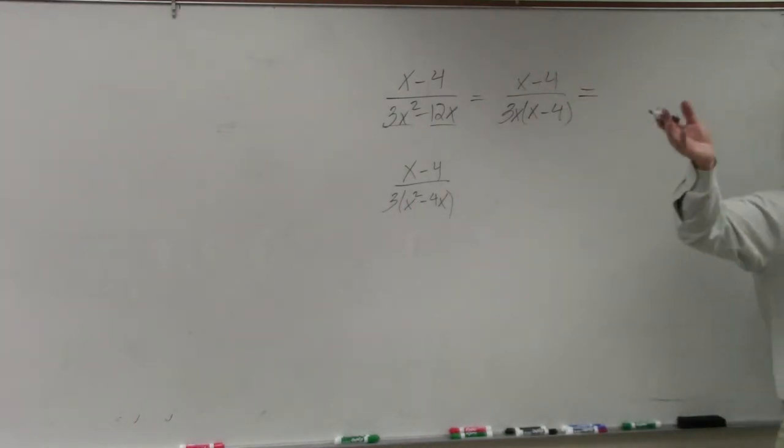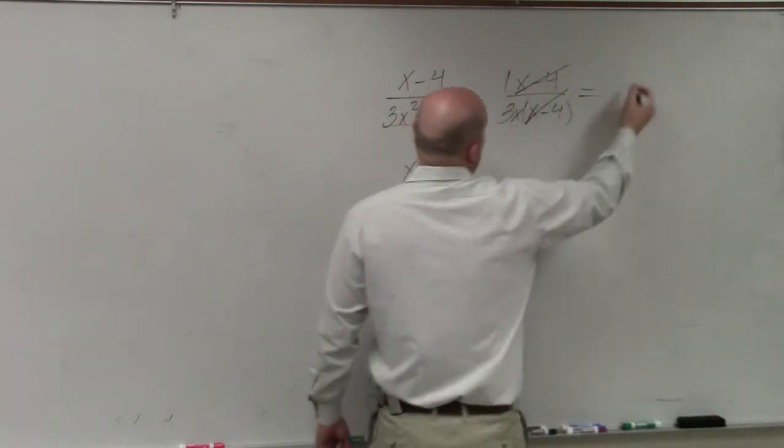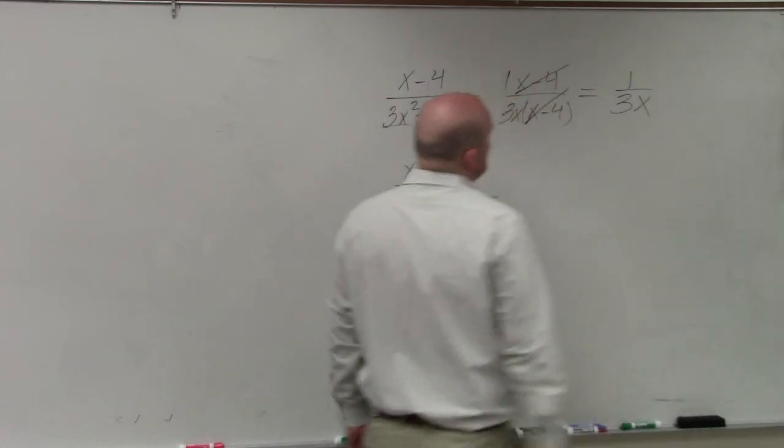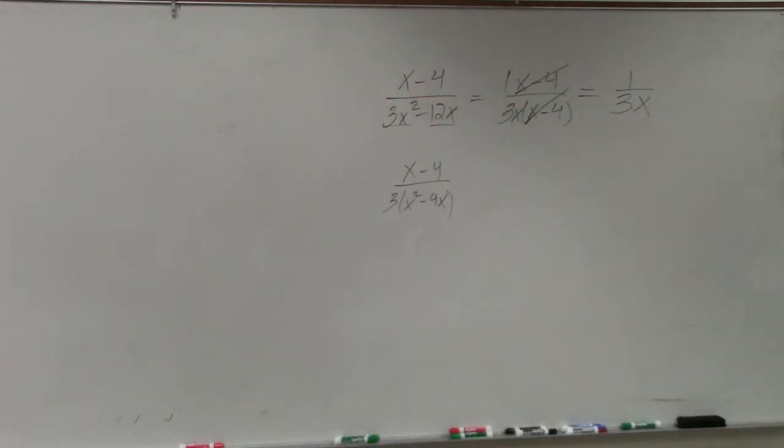So now we have x minus 4 divided by x minus 4, which divides to 1. It got divided by 3x.